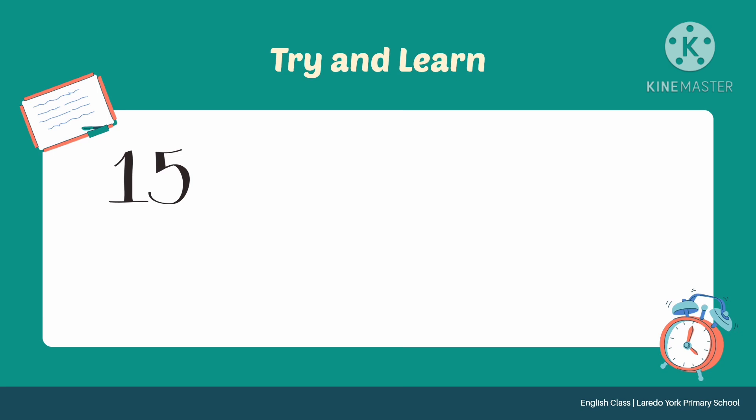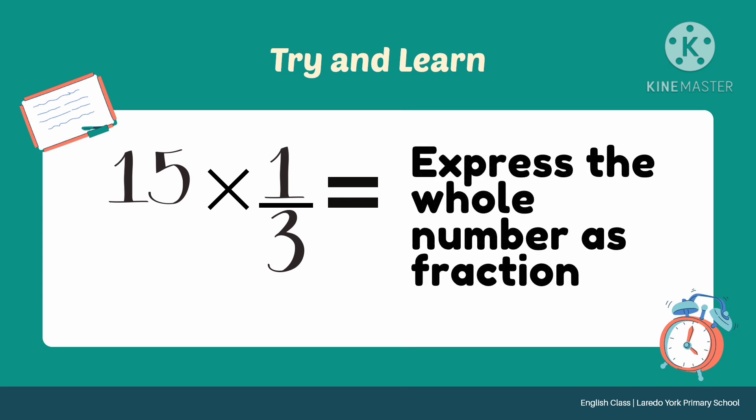The given numbers are 15 and one-third. We're going to multiply 15 by one-third. 15 is a whole number while one-third is a fraction. What is the rule in multiplying fraction with a whole number? The first thing that we are going to do is to express the whole number as fraction.